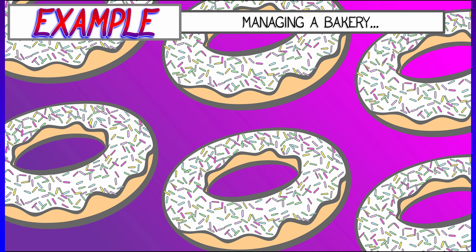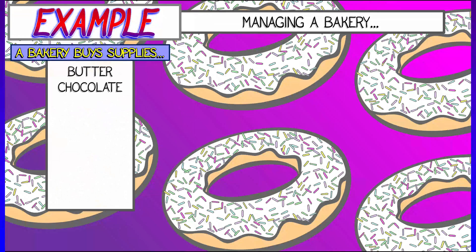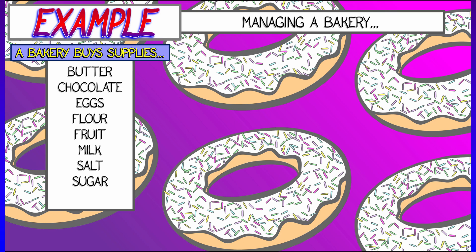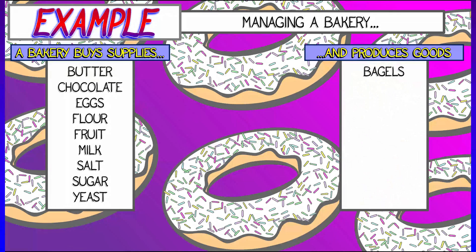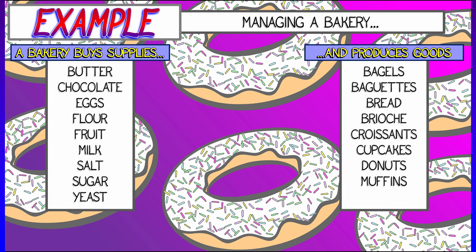Oh, but what happens if you have a lot of inputs and outputs? Let's say that you run a bakery, and you have to buy a whole bunch of ingredients, chocolate, butter, eggs, flour, fruit, milk, salt, sugar, yeast, whatever, and you produce a bunch of different goods that you're going to sell, bagels and breads and croissants and cupcakes and donuts.